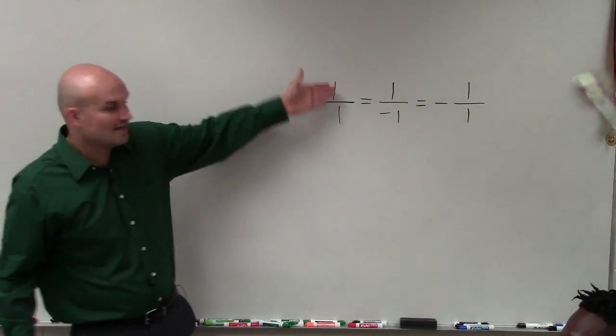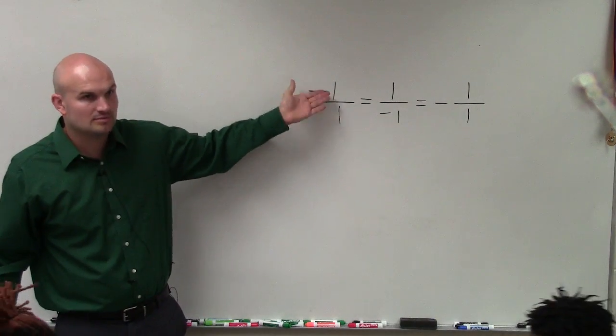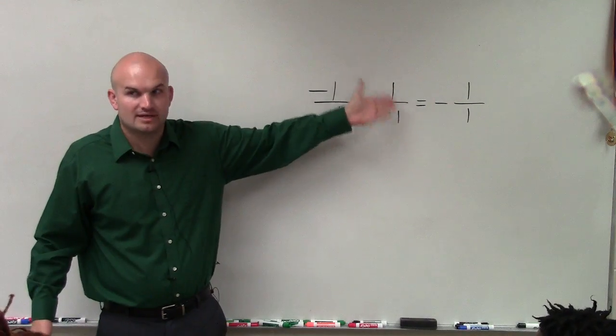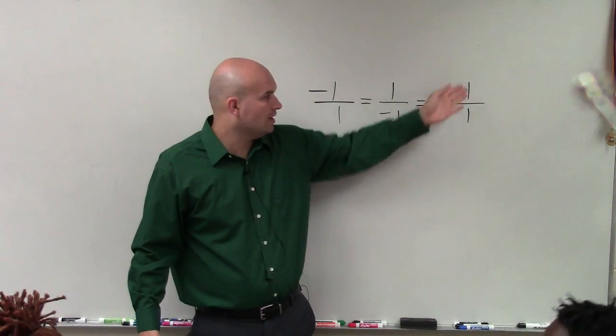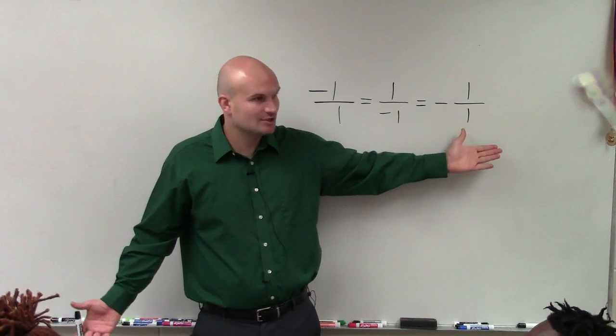Here's an example. You can see negative 1 divided by 1, that's going to equal negative 1. 1 divided by negative 1 equals negative 1. Negative 1 divided by 1 is still equal to negative 1.